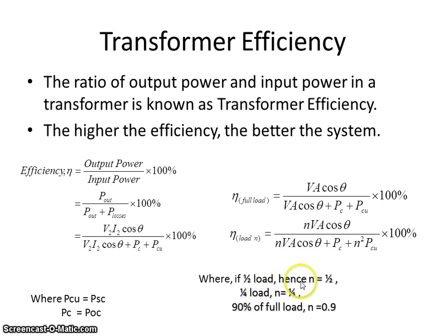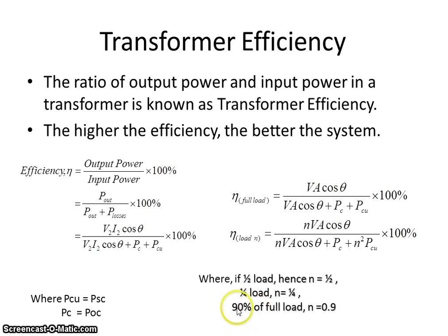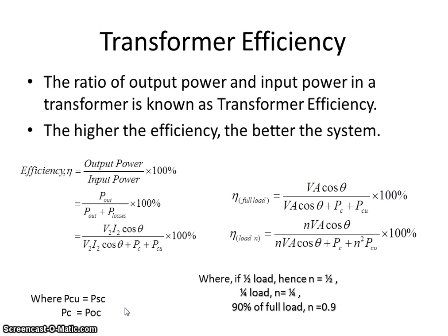For half load, N is equal to 0.5. For quarter load, N is equal to 0.25. For 90% of full load, N becomes 0.9. PCU is also called P short circuit. PC is also called P open circuit. P refers to losses or power.